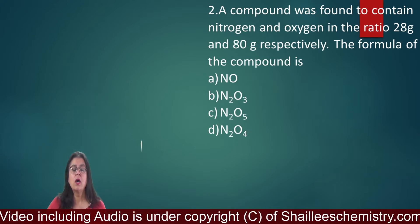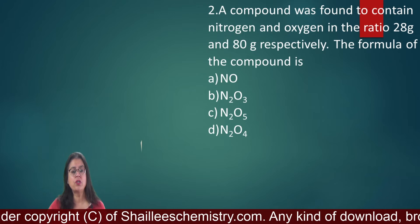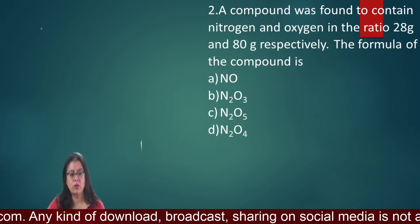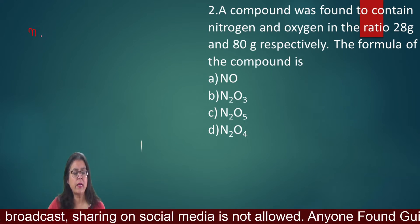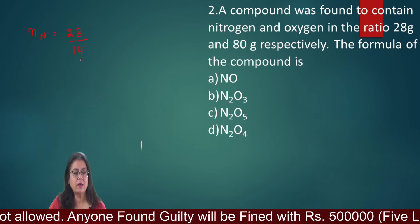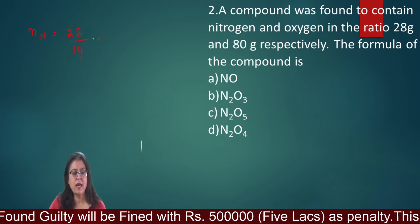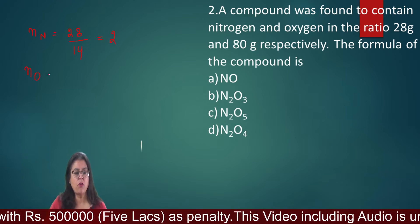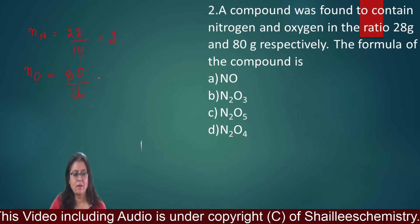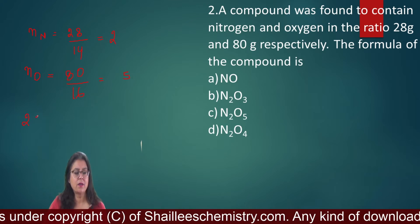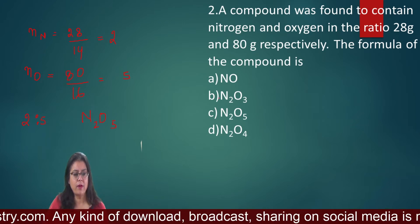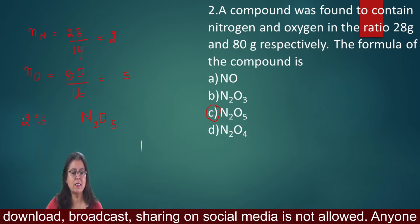Question number 2: A compound was found to contain nitrogen and oxygen in the ratio 28 is to 80. Find the formula of the compound. Number of moles of nitrogen = 28/14 = 2. Number of moles of oxygen = 80/16 = 5. The ratio is 2 is to 5, so the formula is N₂O₅. The correct option is C.